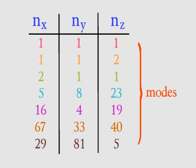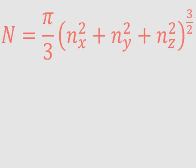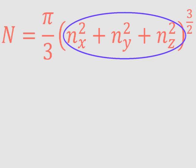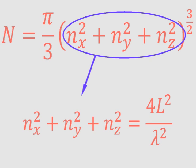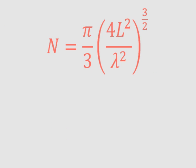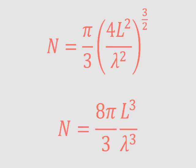That's not easy to find out, but it turns out the number of modes, that's capital N, is equal to this. Here are our three n values, each squared and then added together. Then they're raised to this exponent, three halves, and it's all multiplied by pi over three. Now we can make this simpler because we already figured out that the stuff in parentheses here is equal to this, four L squared over lambda squared. So let's put that in the parentheses. Now we can raise that to the exponent, three halves, and here's what we get. The number of modes N is equal to eight pi over three times L cubed over lambda cubed.